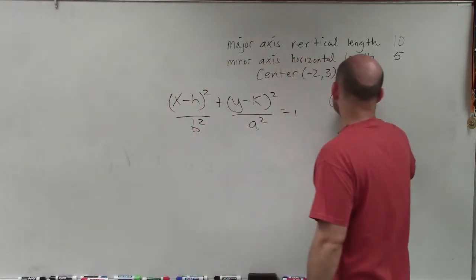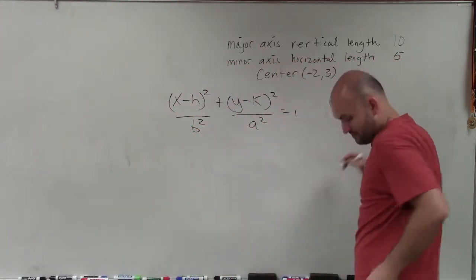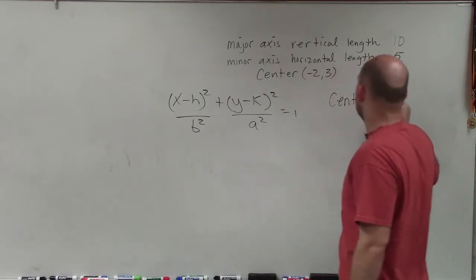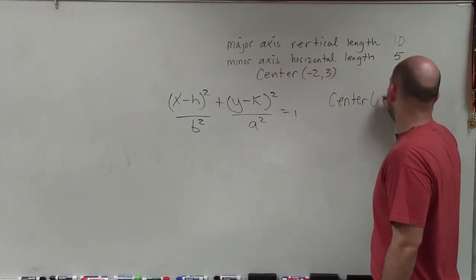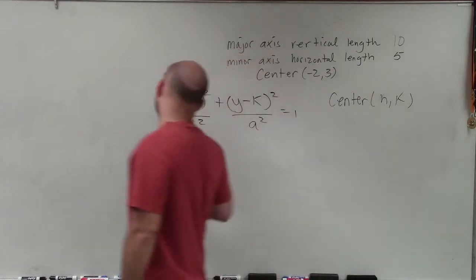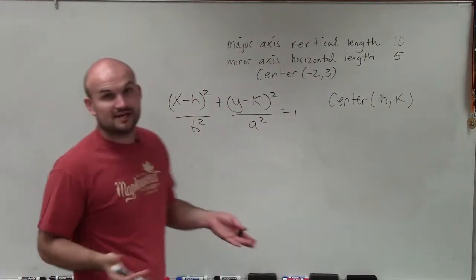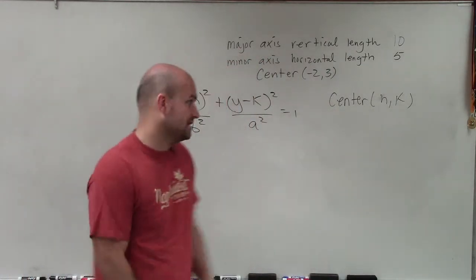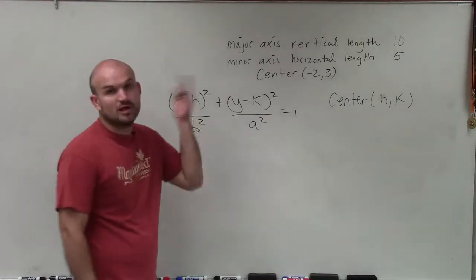The next thing is the center is in the form of h comma k. As far as evaluating our points for h comma k, we have our points negative 2 and 3, which is perfect. We can just plug those in.